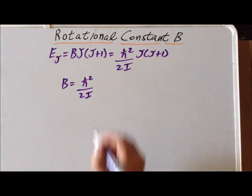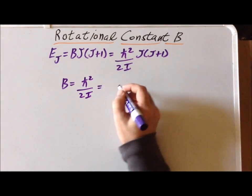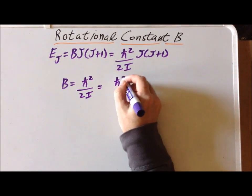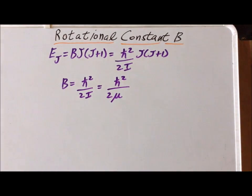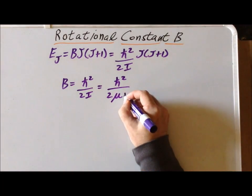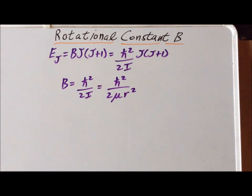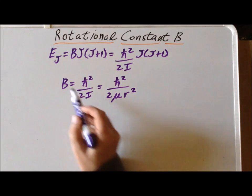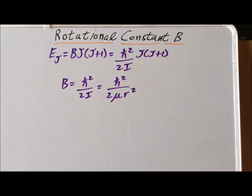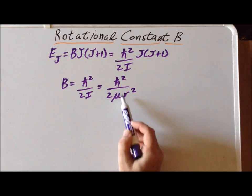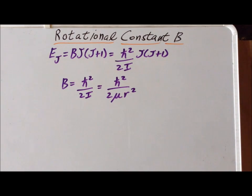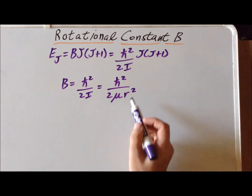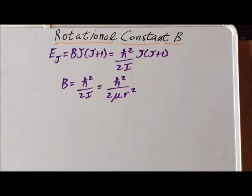Now we can rewrite the definition of the moment of inertia in terms of mu, which is the reduced mass, times r squared, where r is the bond length. So we can see that we can use the rotational constant B, if we know the moment of inertia and the mass of the molecule, to determine the bond length r.